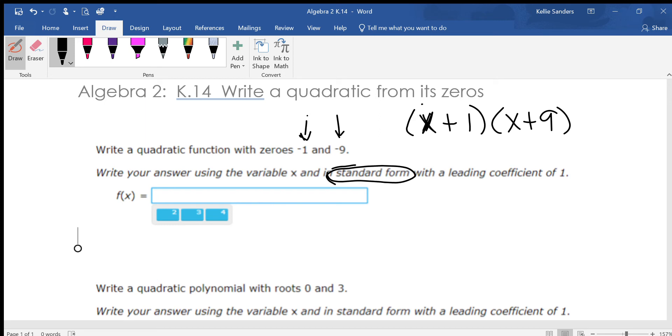So x times x, so x squared plus nine x, one x plus nine. Add your like terms: x squared plus ten x plus nine.